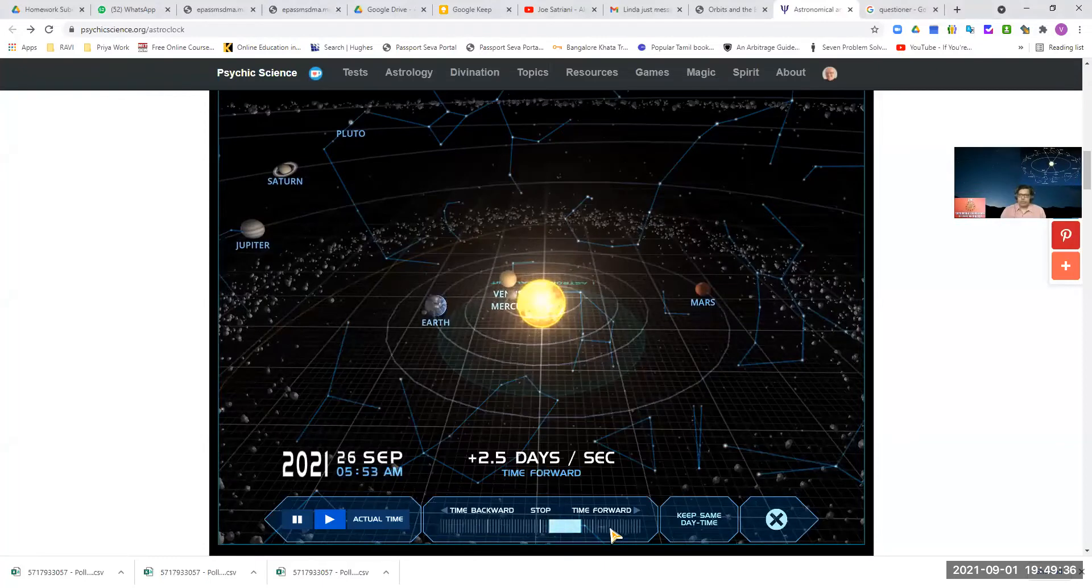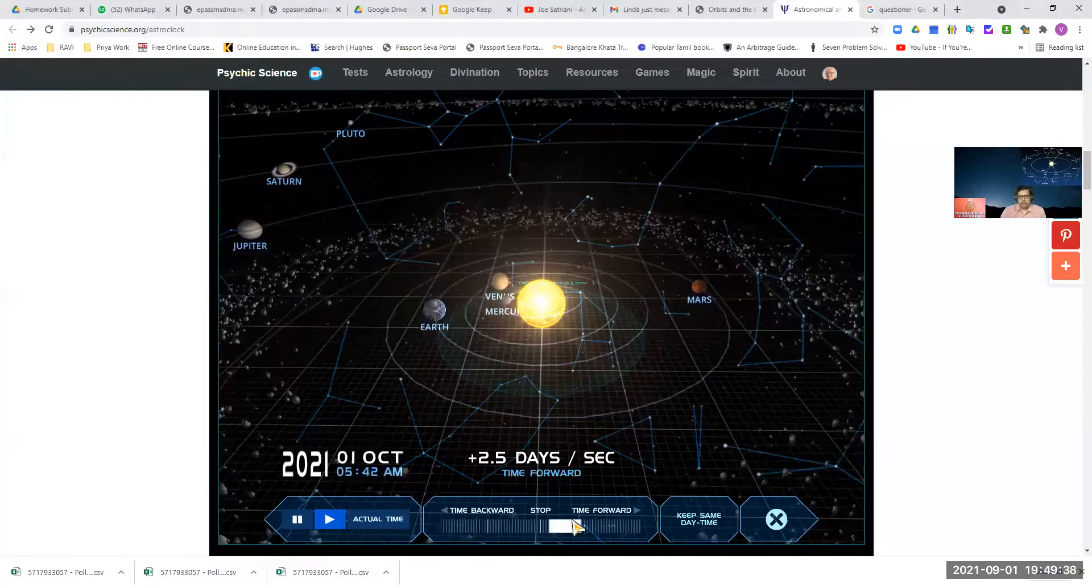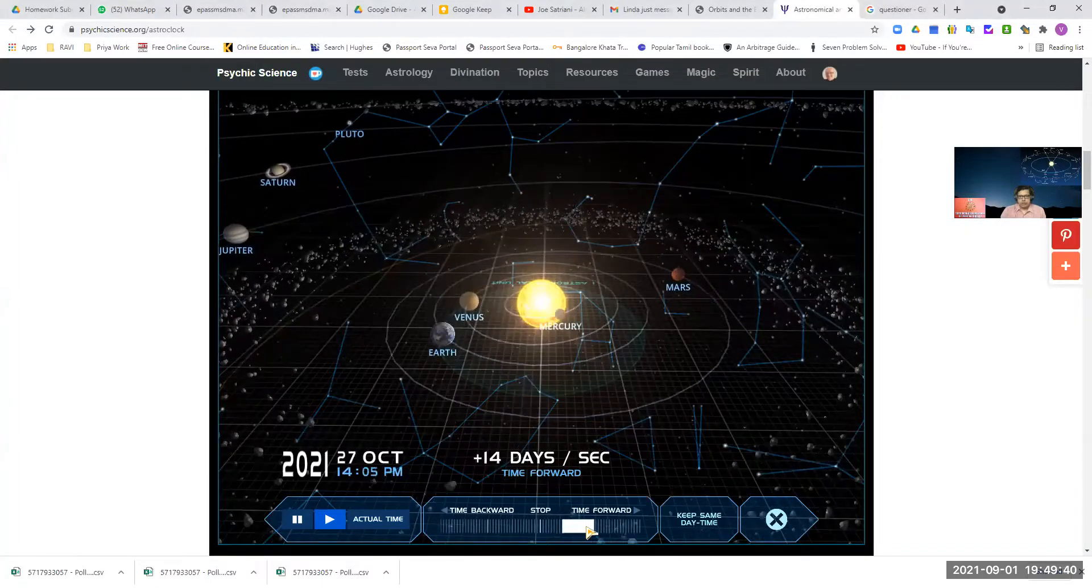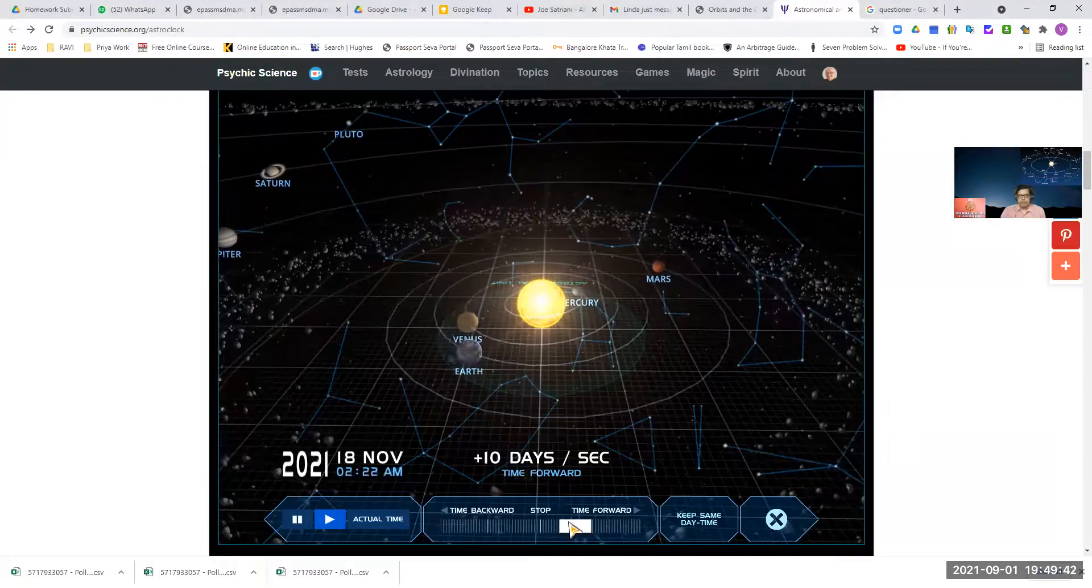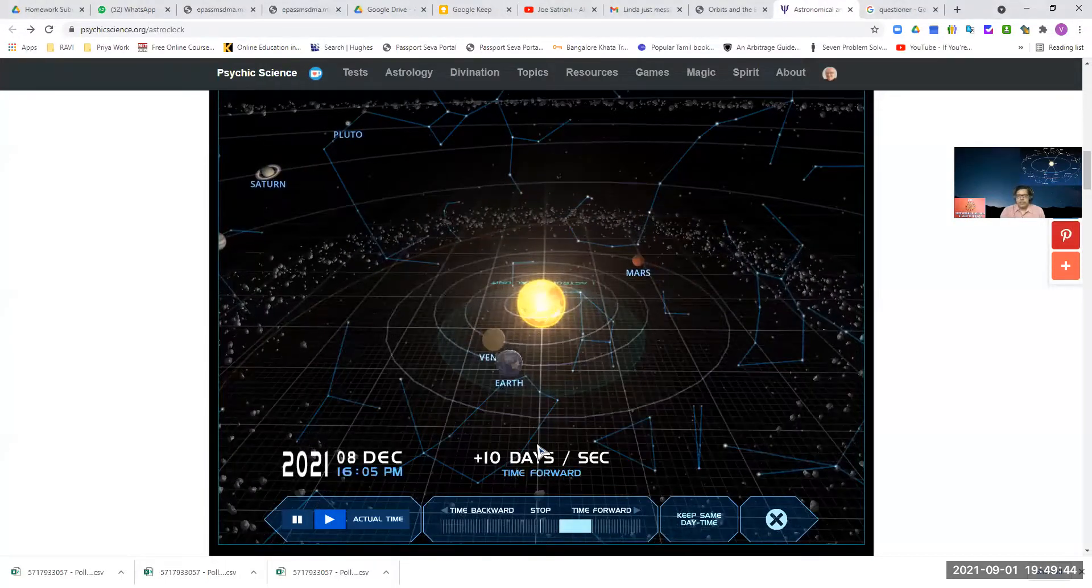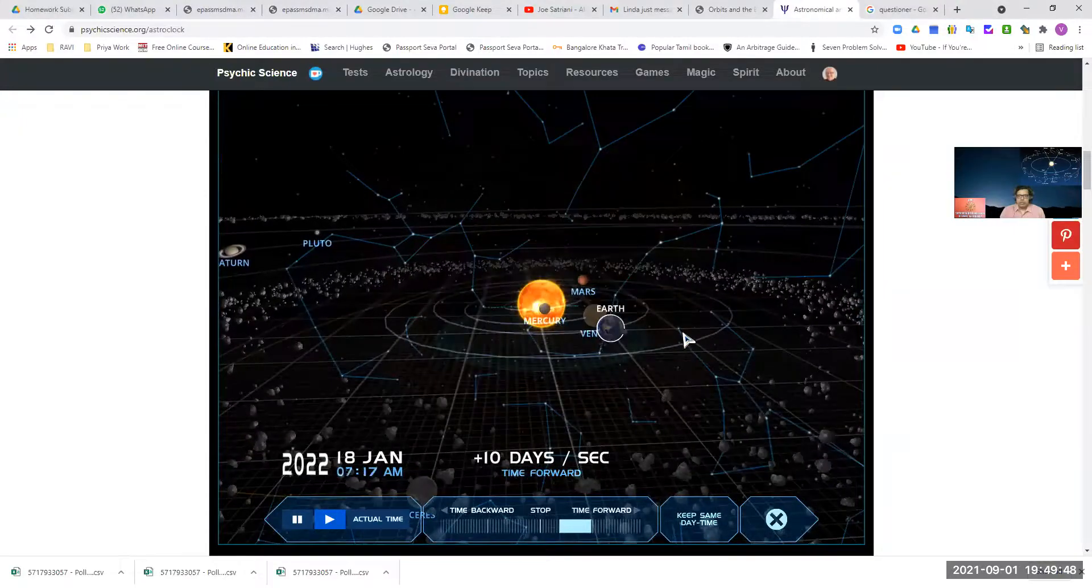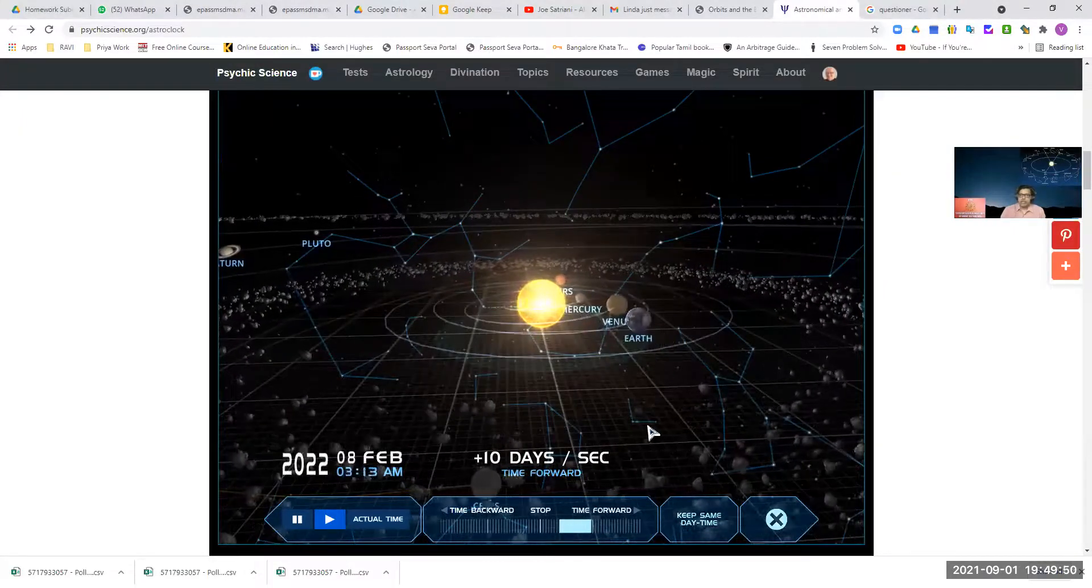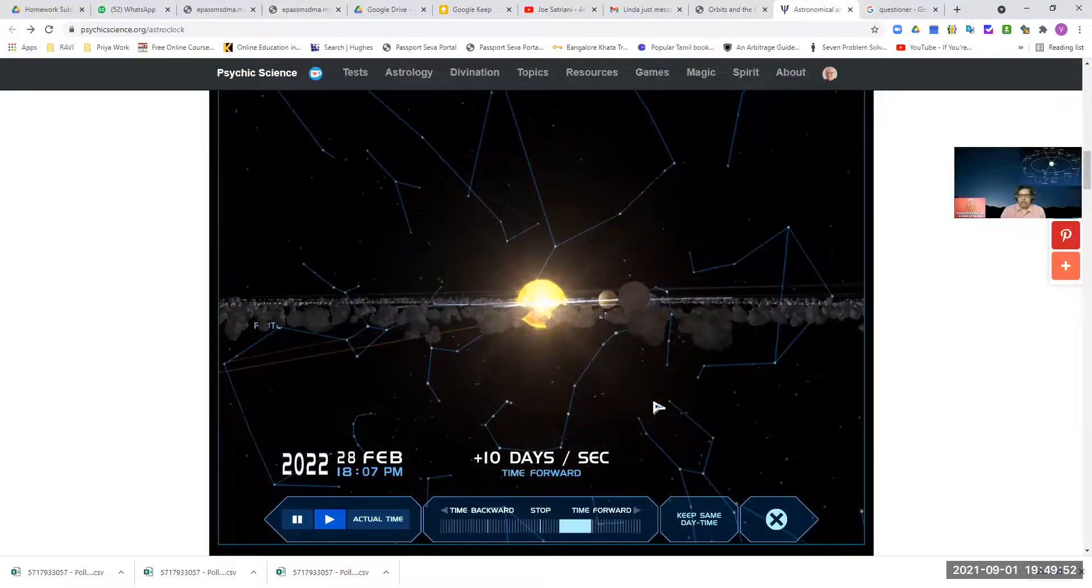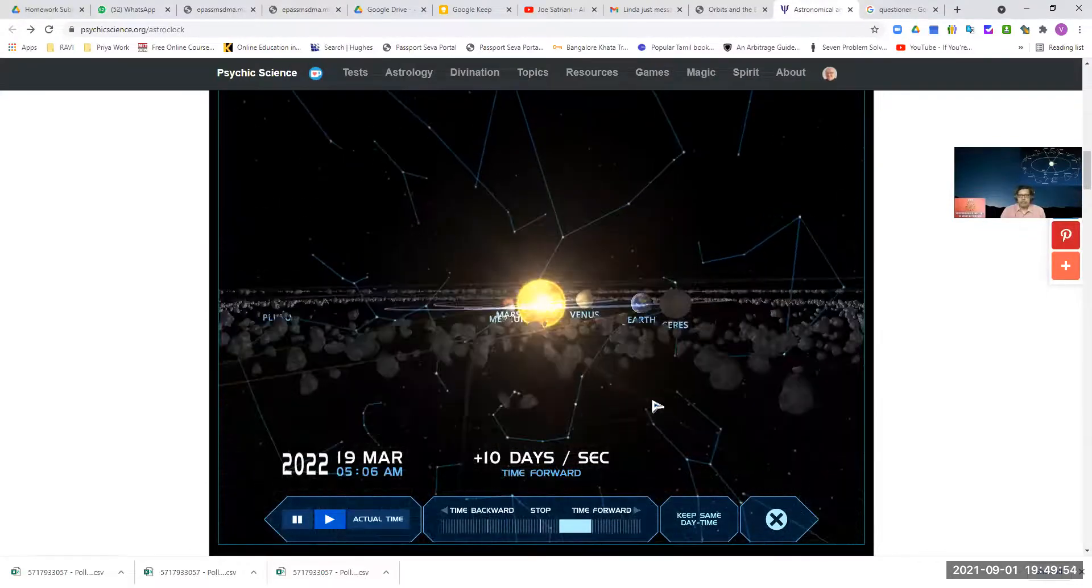So if I move this, let's say around two and a half days per second the movement, or rather let me increase it to 10 days per second. The movement is going so in three seconds you'll find this moves from one zodiac to the next zodiac sign.